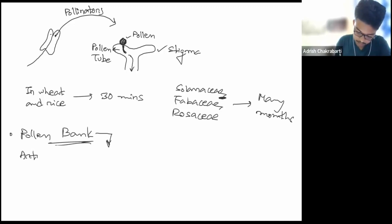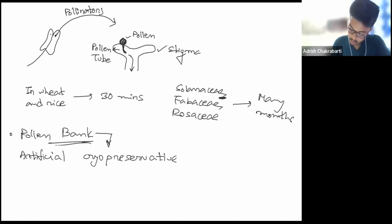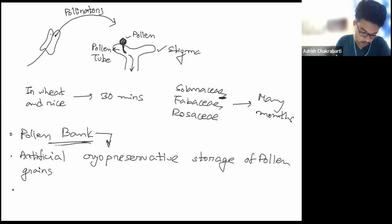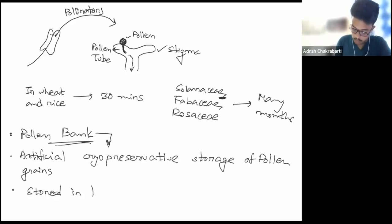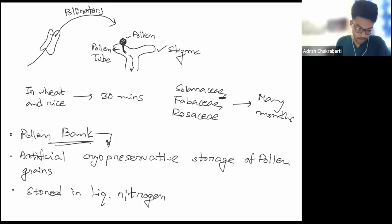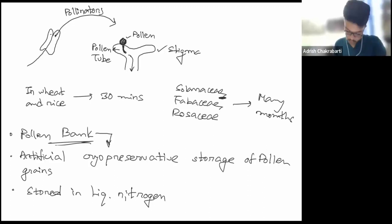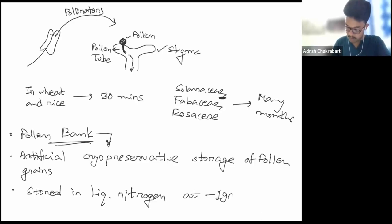The last concept is the pollen bank — this is the artificial cryopreservative storage of pollen grains. The pollen grains are stored in liquid nitrogen at around minus 196 degrees Celsius. Liquid nitrogen is an excellent preserving agent, and collections stored this way are known as pollen banks.